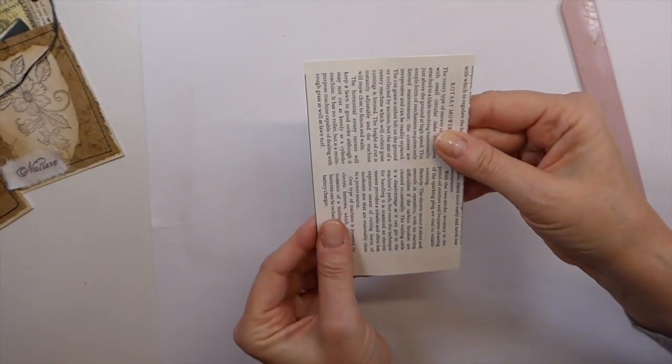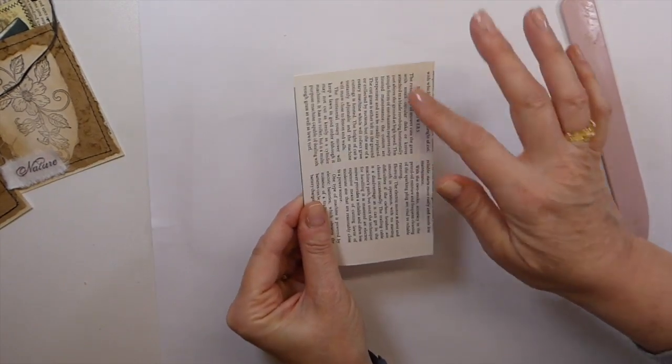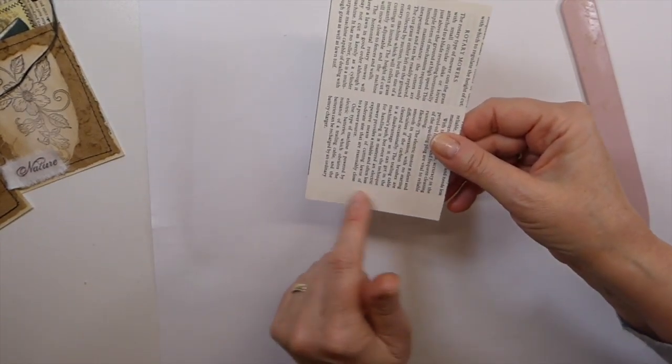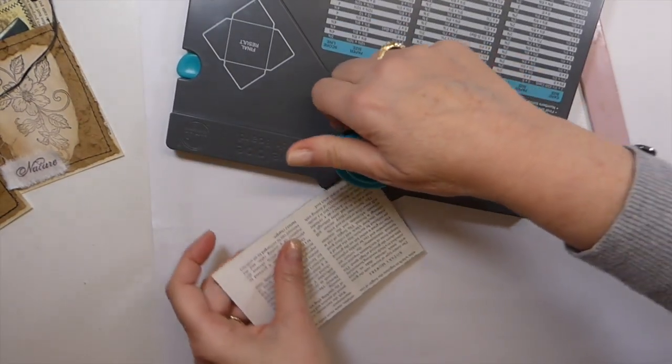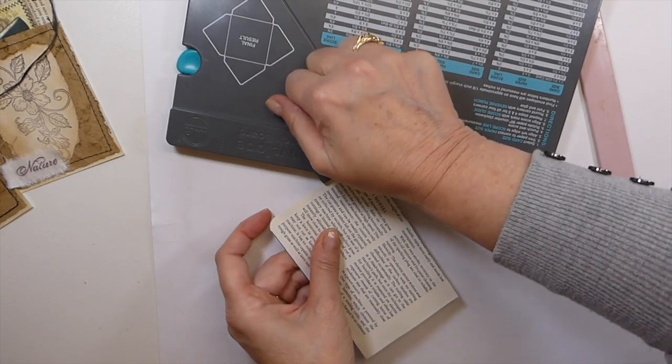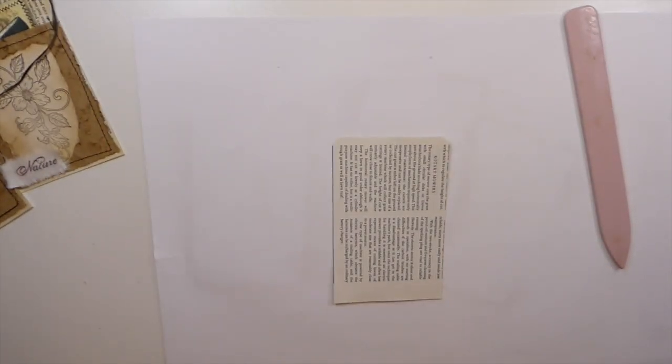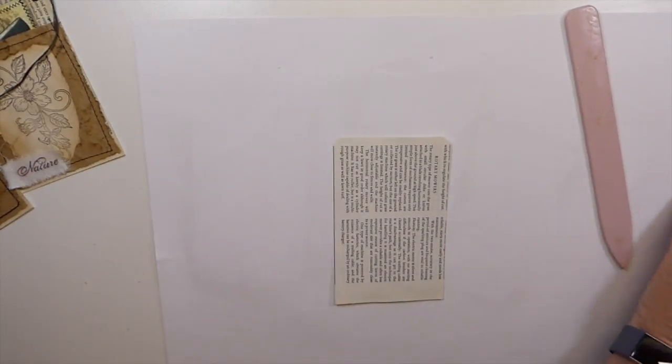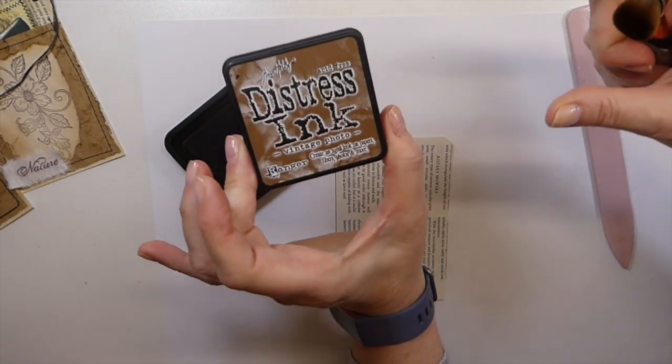The other thing I did was because I knew that I would want some of the print showing, I've opted to have that at the bottom, so I rounded the corners at the top of this. Then just go ahead and distress that with some ink. This is vintage photo.